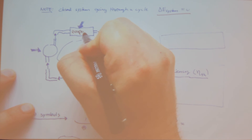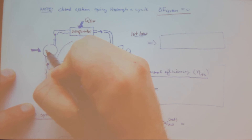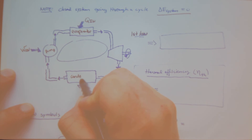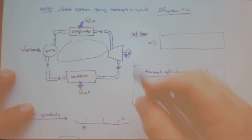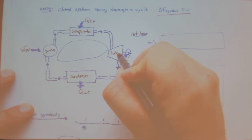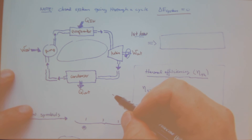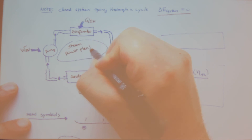Let's draw a schematic of a steam power plant as a heat engine. I have an evaporator with heat in, a pump with work in, a condenser with heat out, and a turbine with work out. This is a steam power plant, which is a type of heat engine.